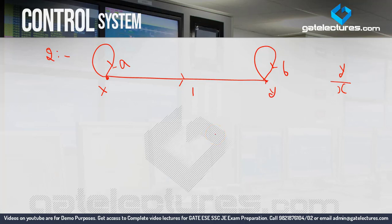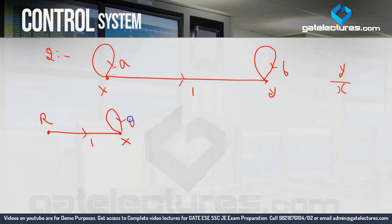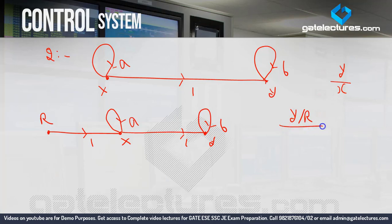Since there is no valid input node, we create a dummy node R. We connect R to X with a gain of 1, so X remains the same. The self-loop at X still has gain A, and the rest of the graph remains unchanged with gain 1 leading to Y and self-loop gain B at Y. This way a proper input node R is created.